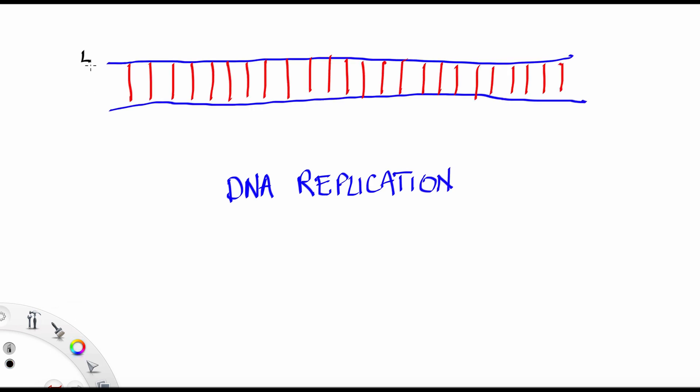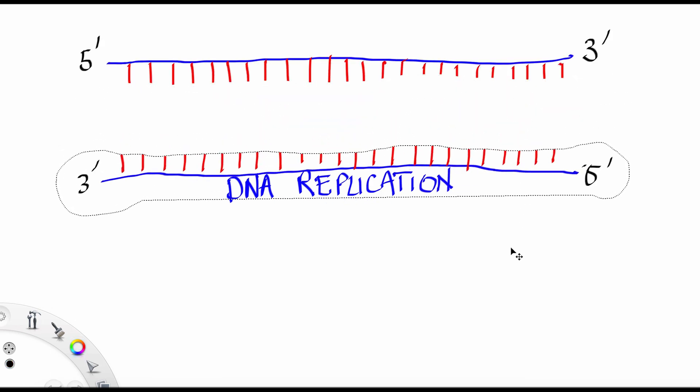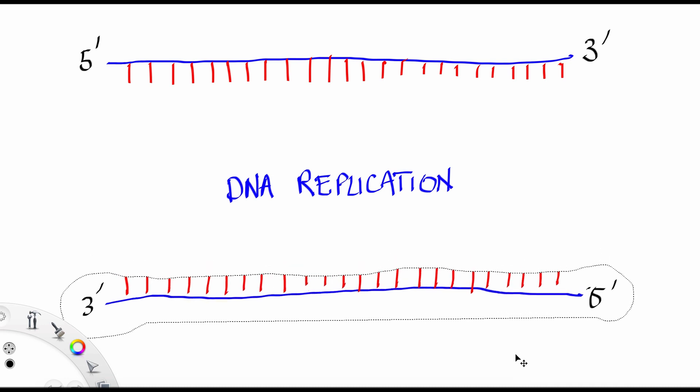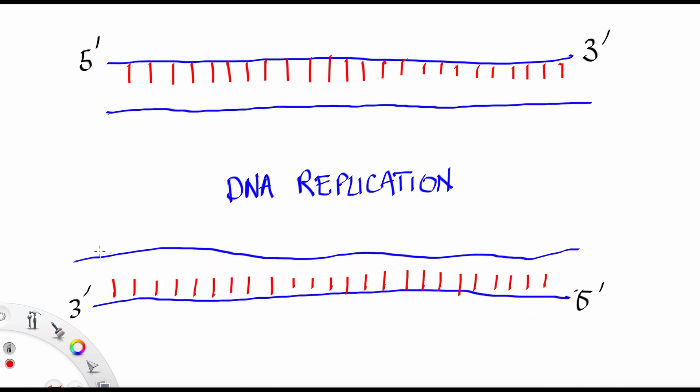DNA replication is very simple. You take double-stranded DNA and you split the strands apart, and through complementary base pairing, you create two new identical strands.